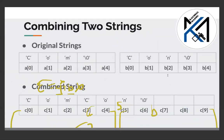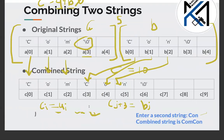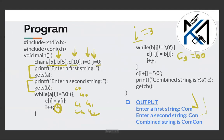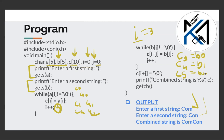Then j increments: j value is 1, so c[i+j] = c[4] = b[1]. Then c[5] = b[2]. Let's see: c[5] and b[2] — b[2] is equal to b. After that, j becomes 3 and we check that b[3] does not equal null.